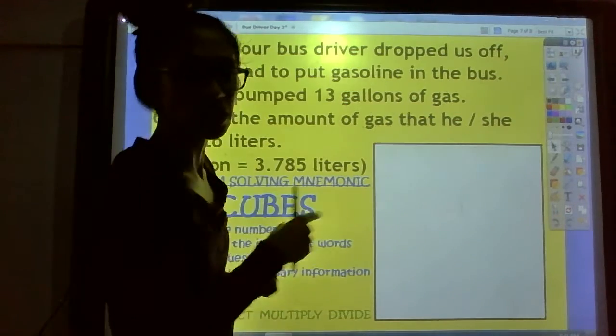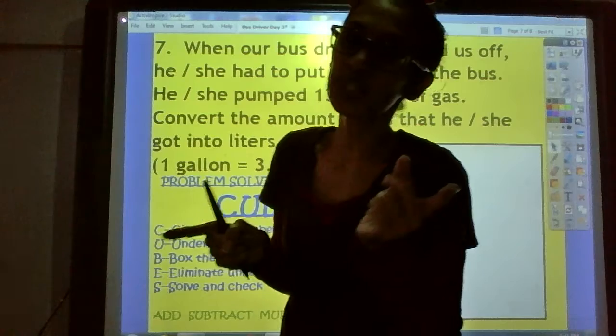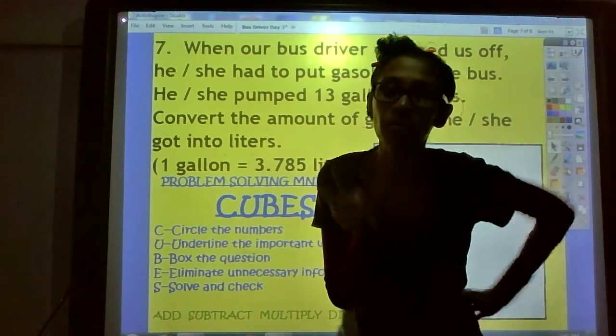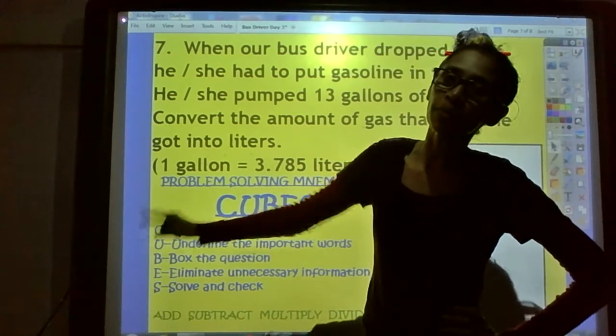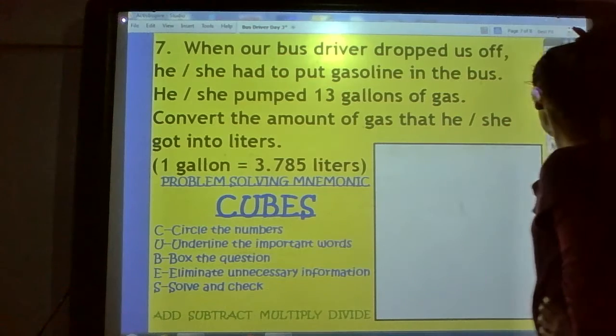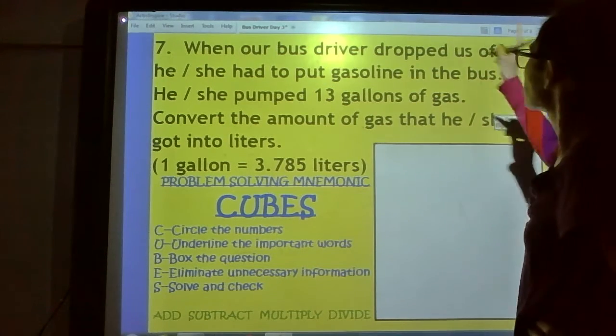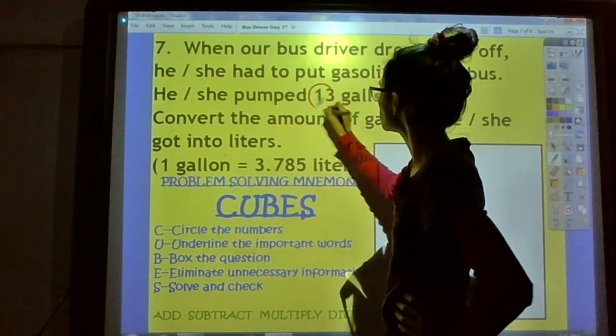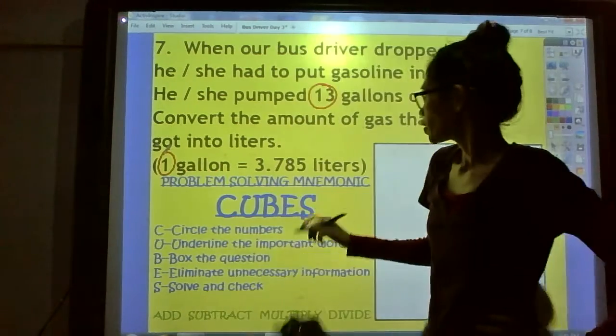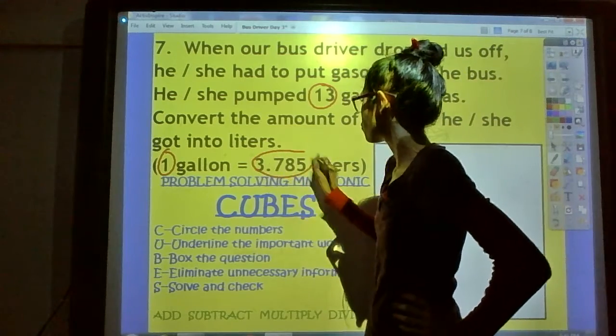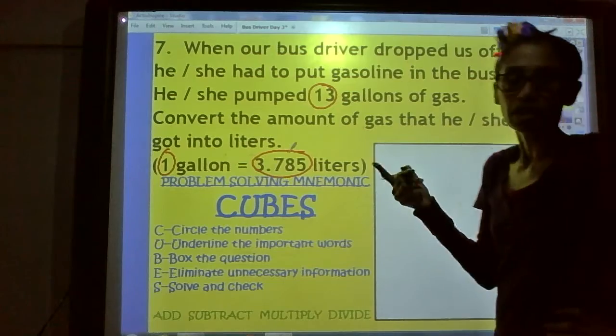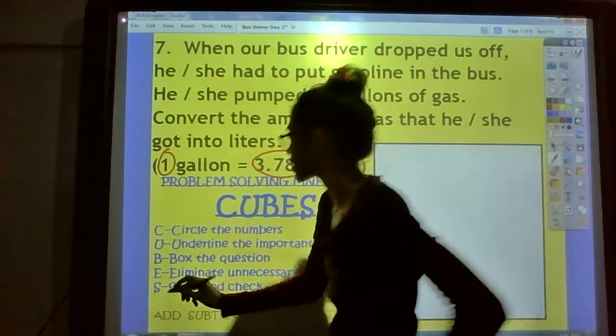So, what we need to do is solve a problem, of course, but we can use our CUBES to solve the problem and help us out. The first step is the C step. That is to circle the numbers. Call out some numbers for me. What numbers do you see? I see 13. What else do you see? 1, 3.785. That's it. Now, what do we need to do? We need to check off that step. Done with that step.